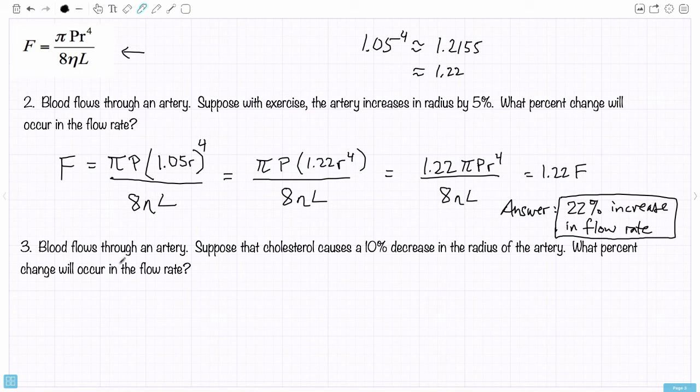Number three says blood flows through an artery. Suppose that cholesterol causes a 10% decrease in the radius of the artery. What percent change will occur in the flow rate? Same math. Same process. Similar also with finance in the following way. A 10% decrease means I'm going to get 90% of the radius. So, we replace the radius by 90% of the radius. A multiplier of 0.9 will give me 90% of the radius and therefore a 10% decrease. That's replacing the original radius. Now, the radius is 90% of its original value. All of this is divided by 8 eta L because that's the formula.